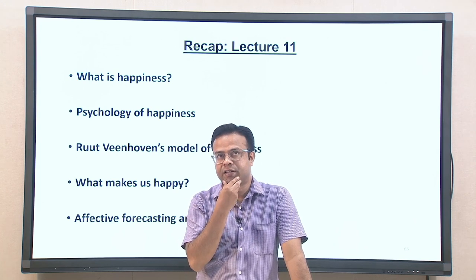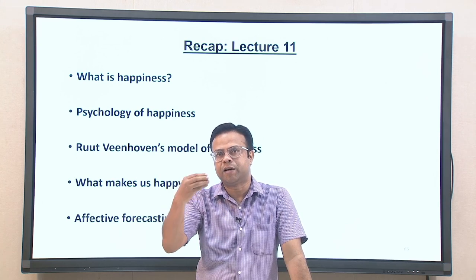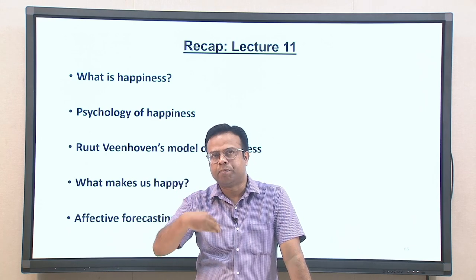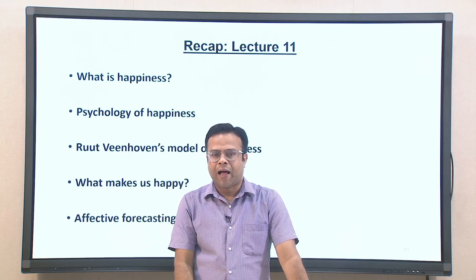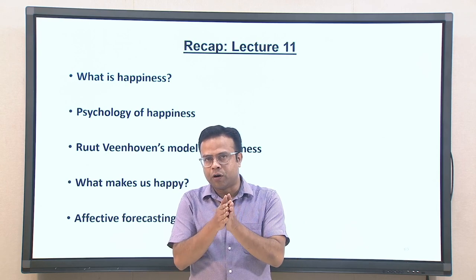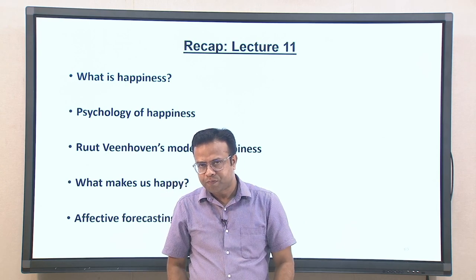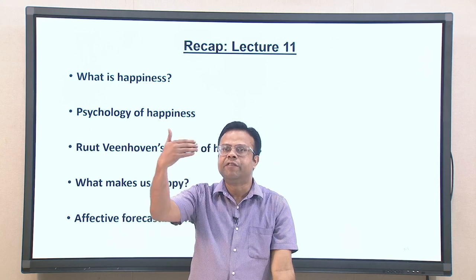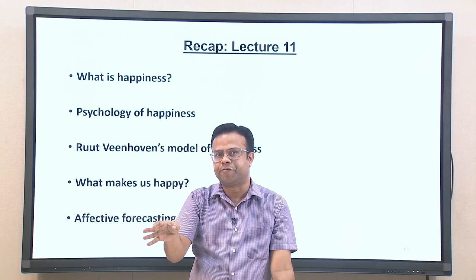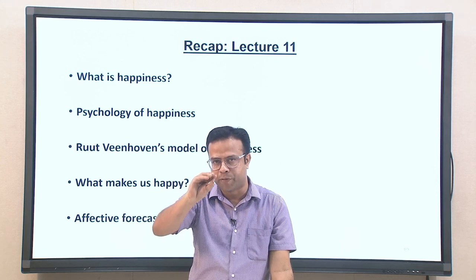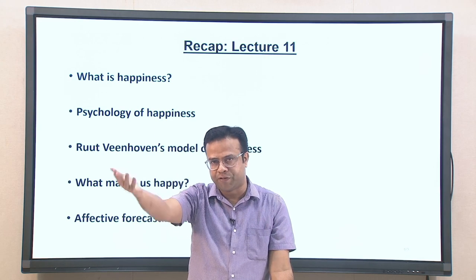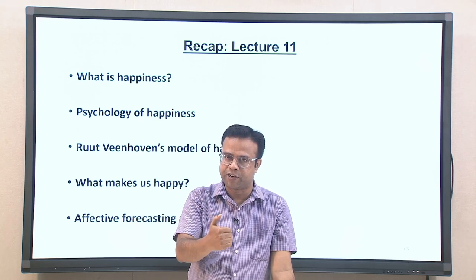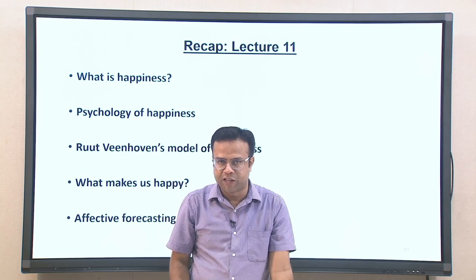We also discussed the concept of affective forecasting — how we keep predicting the emotional consequences of future events. Many times we make errors while predicting future emotional consequences, particularly what is called impact bias, where we typically overestimate the intensity and duration of emotional consequences of certain events. Whether positive or negative events, we generally exaggerate the associated emotion. We discussed various causes behind this in the last lecture.